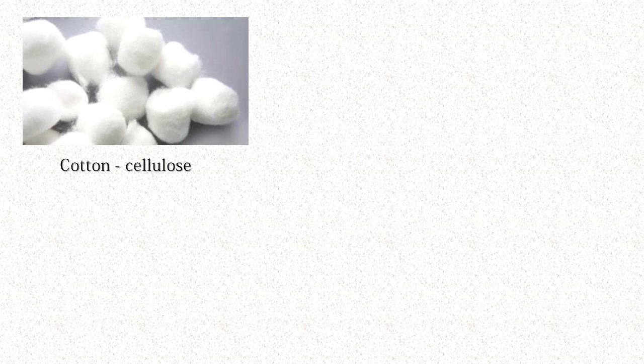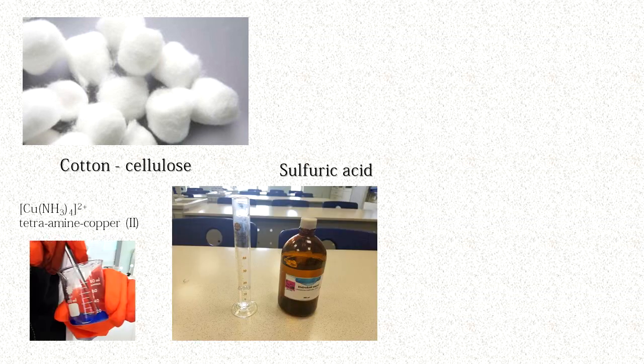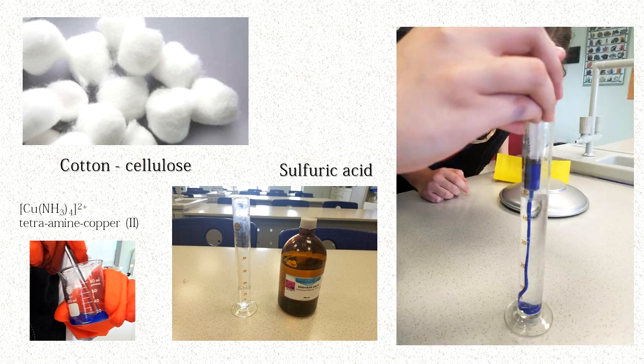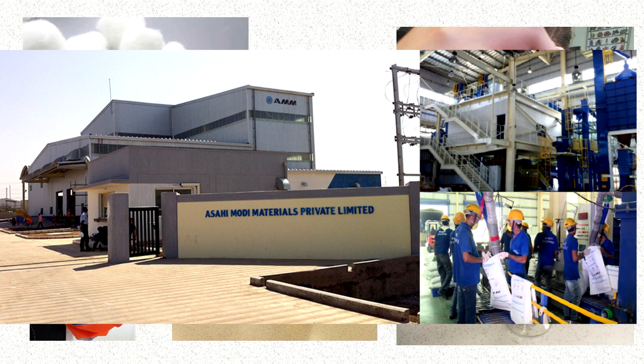In this demonstration, cellulose is dissolved in a solution of tetraamine copper ions to produce a blue liquid. When the liquid is injected into sulfuric acid, polymer fibers of rayon are produced. This is the actual procedure used every day by different industries to produce artificial silk.